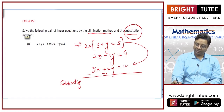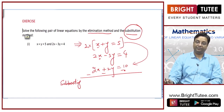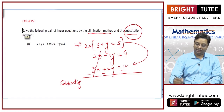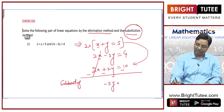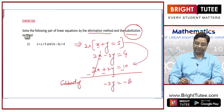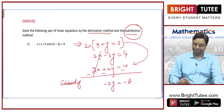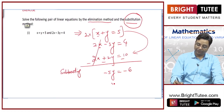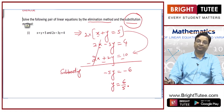This will become negative, this will become negative, this will become negative because this is subtraction. So, 2x will get cancelled, minus 5y will be equal to 4 minus 10, that is minus 6. So, y is equal to 6 by 5.